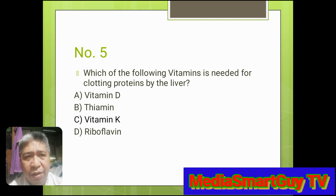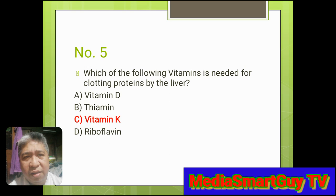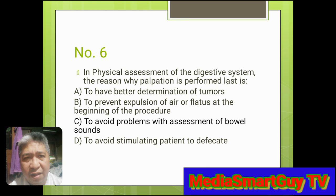Number 5. Which of the following vitamins is needed for clotting proteins by the liver? A. Vitamin D. B. Thiamine. C. Vitamin K. D. Riboflavin. Answer: C. Vitamin K.